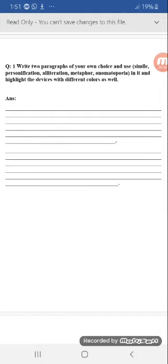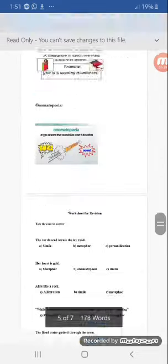Write two paragraphs of your own choice using simile, personification, alliteration, metaphor, and onomatopoeia. Highlight the devices with different colors as well. Incorporate these literary devices in your paragraphs. Students, that's all. Complete your task. Thanks.